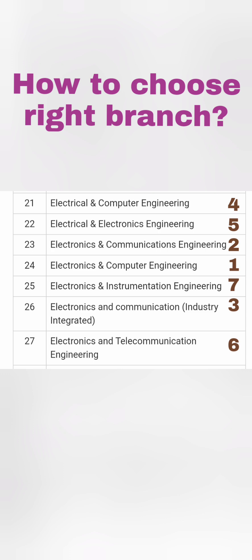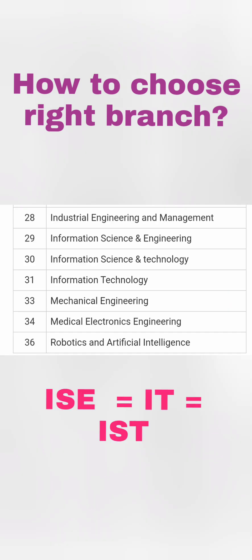Fourth is Electrical and Computer Engineering, a good combination of the two fields. Fifth is Electrical and Electronics (EEE), also a very good option. Sixth is Telecommunication Engineering, which is a combination of mobile networks and related areas. Seventh preference can be given to Electronics and Instrumentation Engineering, which is more device-based — ranked seventh based on scope.